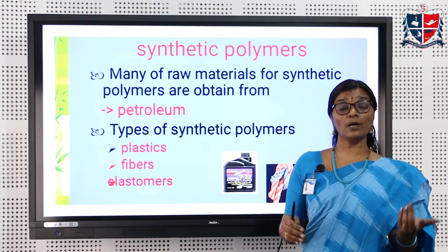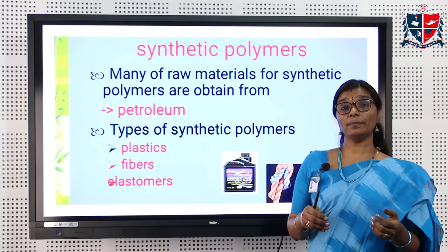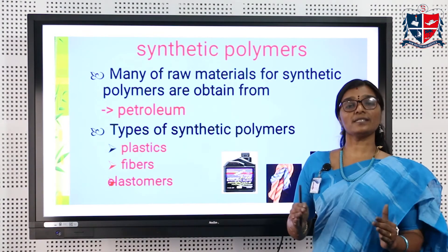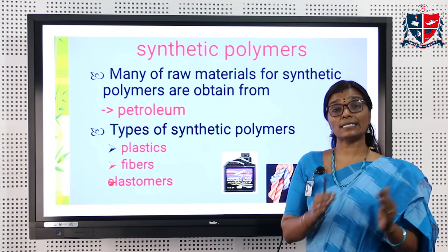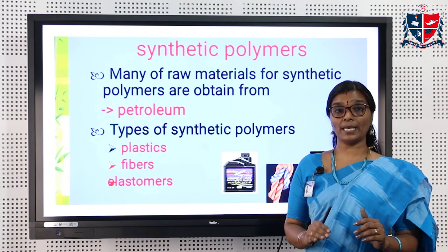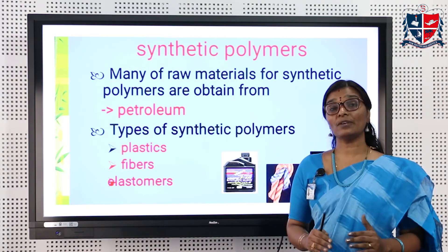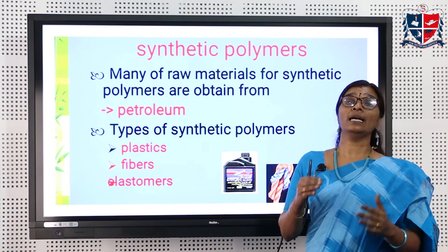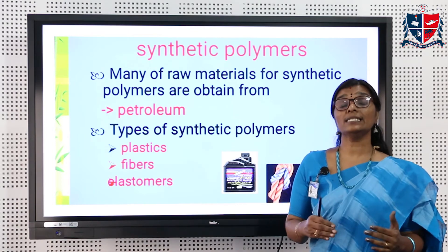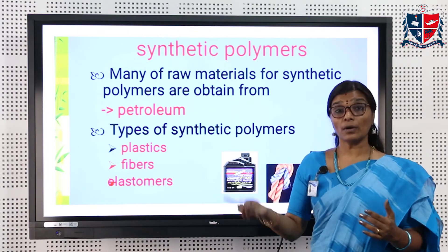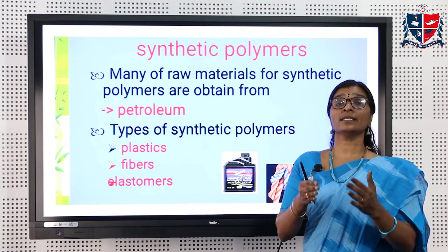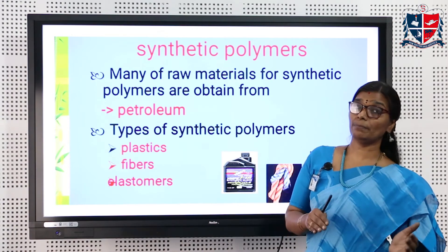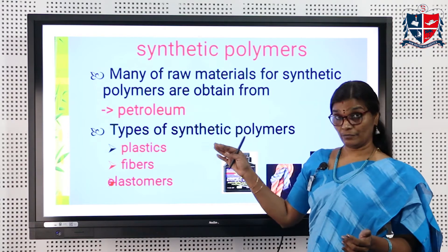Fibers — such as nylons and polyesters — have strong intermolecular force of attraction. Plastics are the group where the intermolecular force of attraction is intermediate — between that of elastomers and fibers. So, elastomers have weak intermolecular forces, fibers have strong intermolecular forces, and plastics have intermediate intermolecular forces.